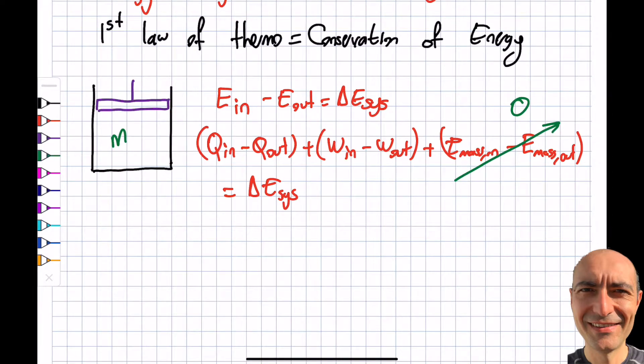So I only have these terms. Let's talk about Q for a second. Heat transfer is energy transfer across a boundary due to temperature difference. There needs to be some delta T between the surrounding and the system.